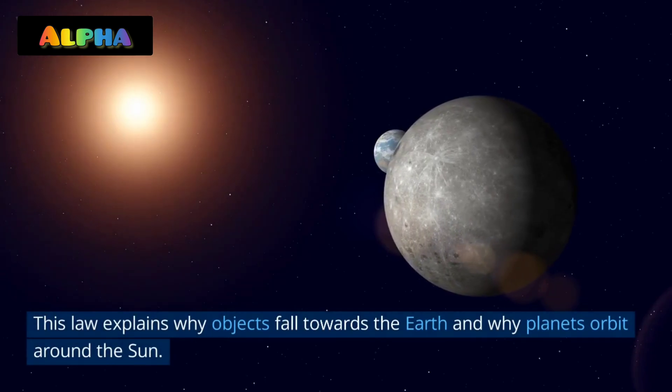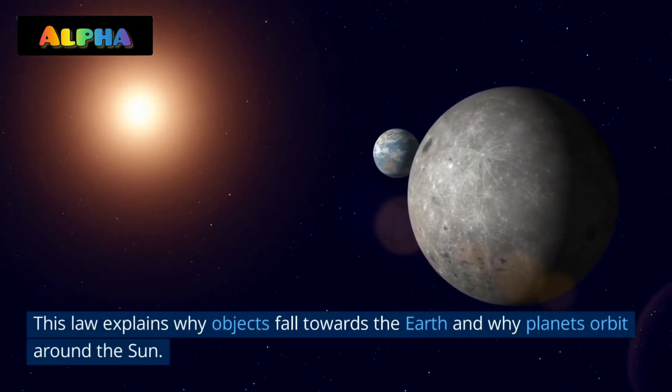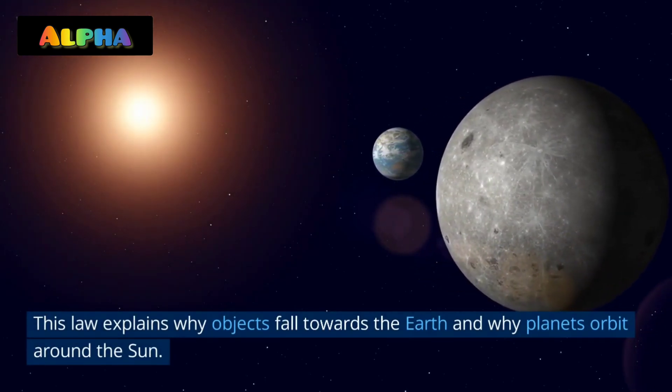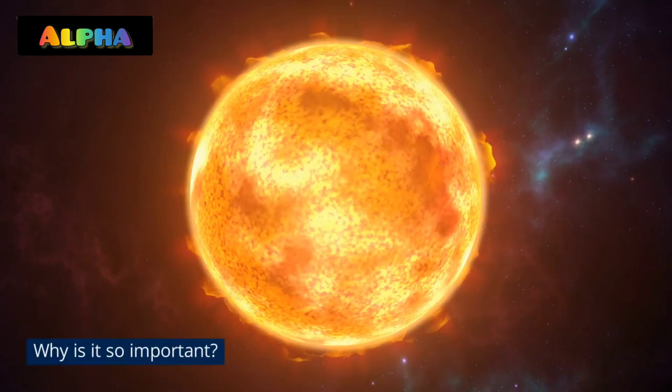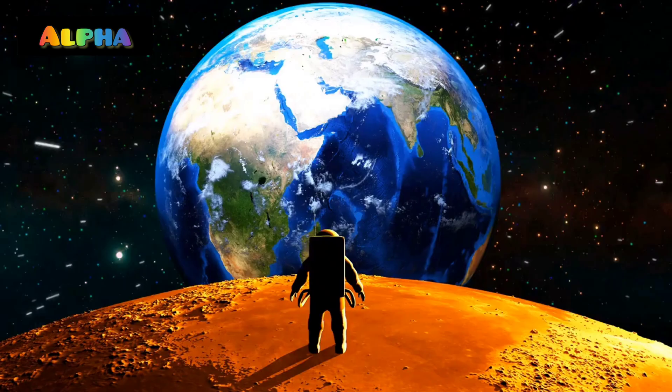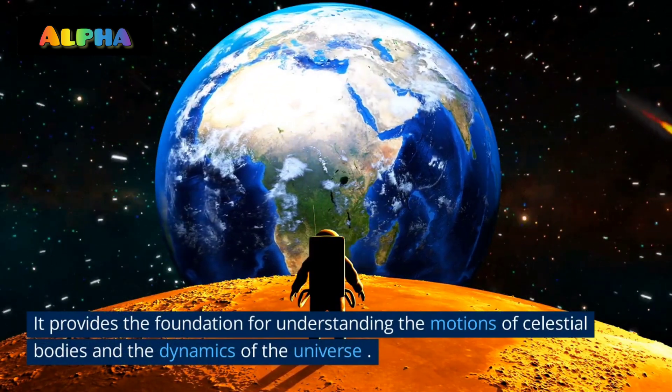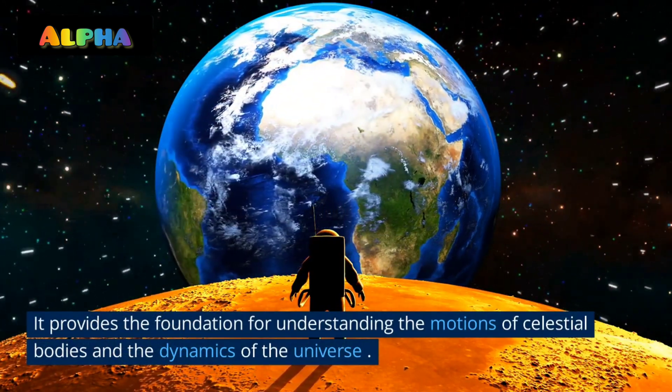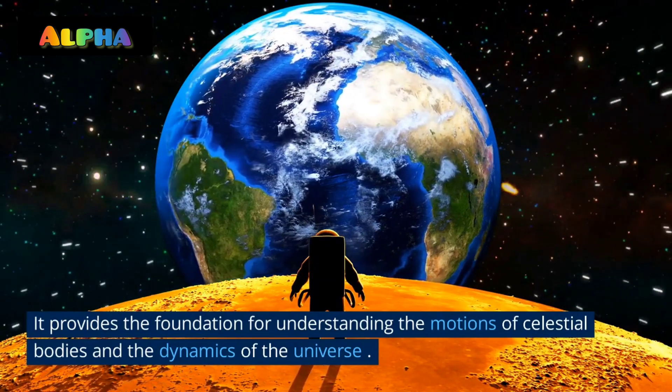This law explains why objects fall towards the Earth and why planets orbit around the Sun. It provides the foundation for understanding the motions of celestial bodies and the dynamics of the universe.